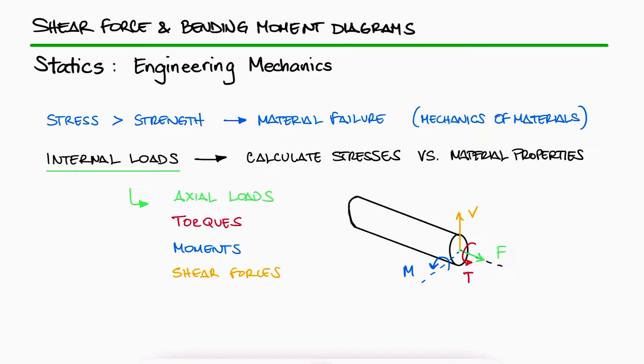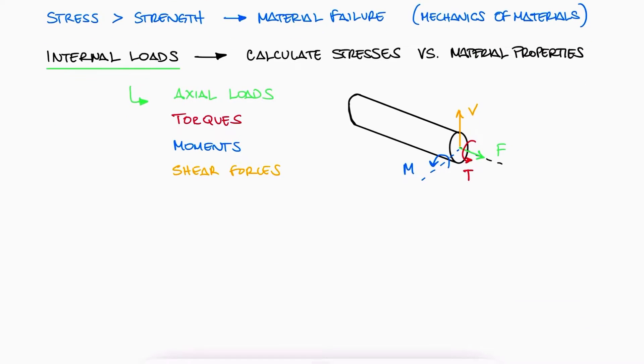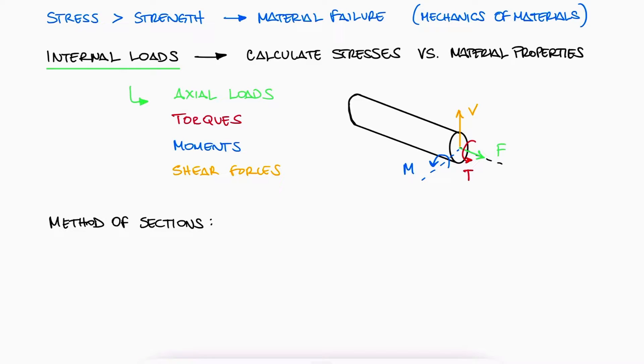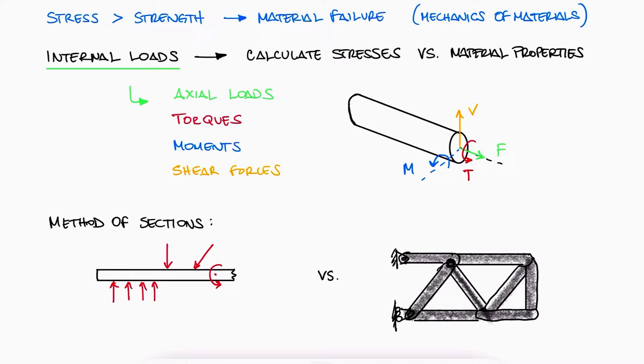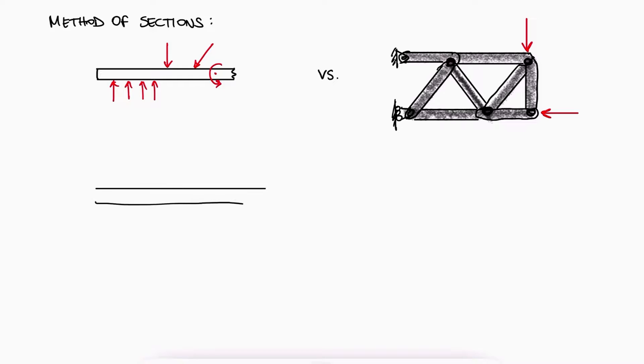These internal forces and moments can be found using the method of sections we studied in the previous video. The difference here is that when we are trying to find the internal shear and bending moments, we're usually just looking at a single member as opposed to the more complex looking truss structures we studied then. Any external load that affects the axis of the beam or member will be known as an axial load, and any external load that is perpendicular to the axis of the beam will be known as a shear load.